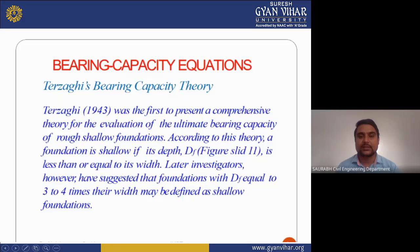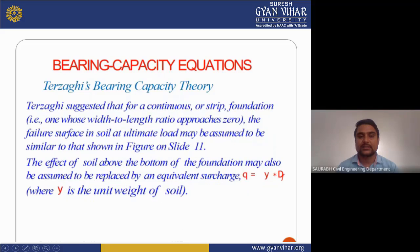Terzaghi suggested that for a continuous or strip foundation, the failure surface in the soil at ultimate load may be assumed to be similar to that shown in figure on slide number 11. The effect of the soil above the bottom of the foundation may also be assumed to be replaced by the equivalent surcharge q, which equals gamma times Df, where gamma is the unit weight of soil.